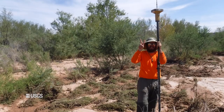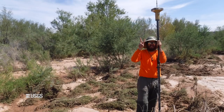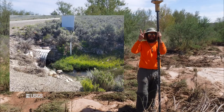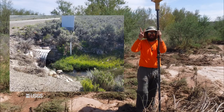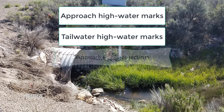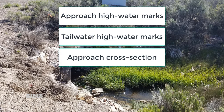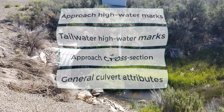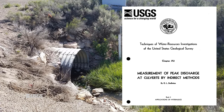Hi, this is Chris Morris and I'm the Surface Water Specialist at the USGS in Las Vegas, Nevada. I will be talking about surveying the geometry of pipe and pipe arch culverts. In previous videos, I discussed surveying the approach high watermarks, the tailwater high watermarks, an approach cross section, and the general attributes of any culvert. The information presented in this single component video can also be found in TWRI 3-A3, Measurement of Peak Discharge at culverts by indirect methods.